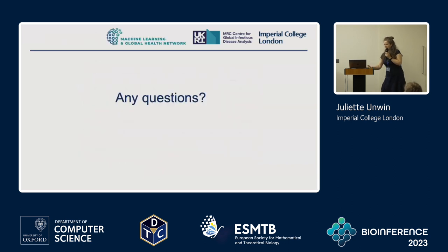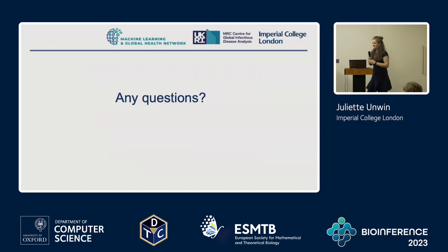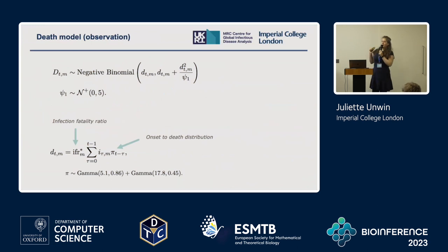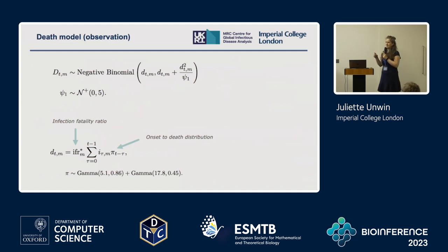That's the end of my talk. Does anyone have any questions? A question came about the onset-to-death slide: why were two gamma distributions used? I can't remember off the top of my head, but I think it's because we break it up into symptom onset to death rather than a single distribution. Let's pull up the paper and go through it.